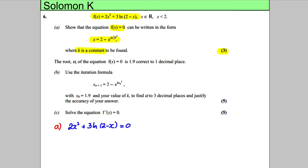Now we want x as the subject of the formula, and it looks like we want to get rid of the natural logarithm. So we're going to take exponentials of both sides and we want to keep the e to the x squared. It looks like we're trying to make this x the subject of the formula, because getting this x out will create the exponential and keep the x squared there.